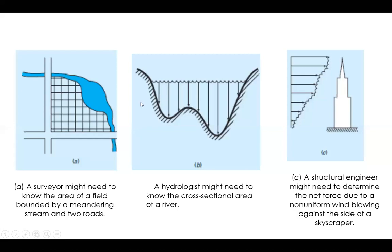Let us take three examples from civil engineering. First, consider a layout where a natural river is flowing, with some plots or sites and two roads. It is important for a surveyor to calculate the area of these plots. The surveyor will collect all the points through a survey, but finding the area can be very difficult.